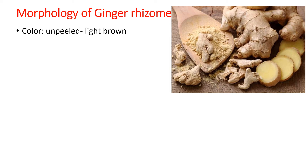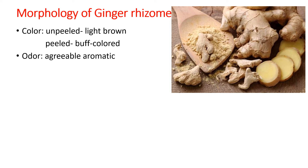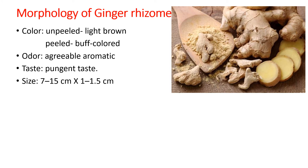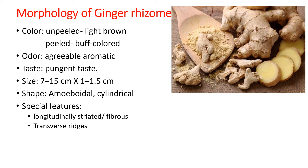The color of ginger, for an unpeeled rhizome, is light brown, and for a peeled one it is buff colored. The odor is agreeable and pleasantly aromatic. Taste is pungent. Size ranges from 7 to 15 cm in length and 1 to 1.5 cm in diameter. The shape is irregular, amoeboidal, or cylindrical for short pieces. Special features include longitudinal striations that are fibrous throughout the body, and transverse ridges indicating the nodes and internodes of the rhizome.